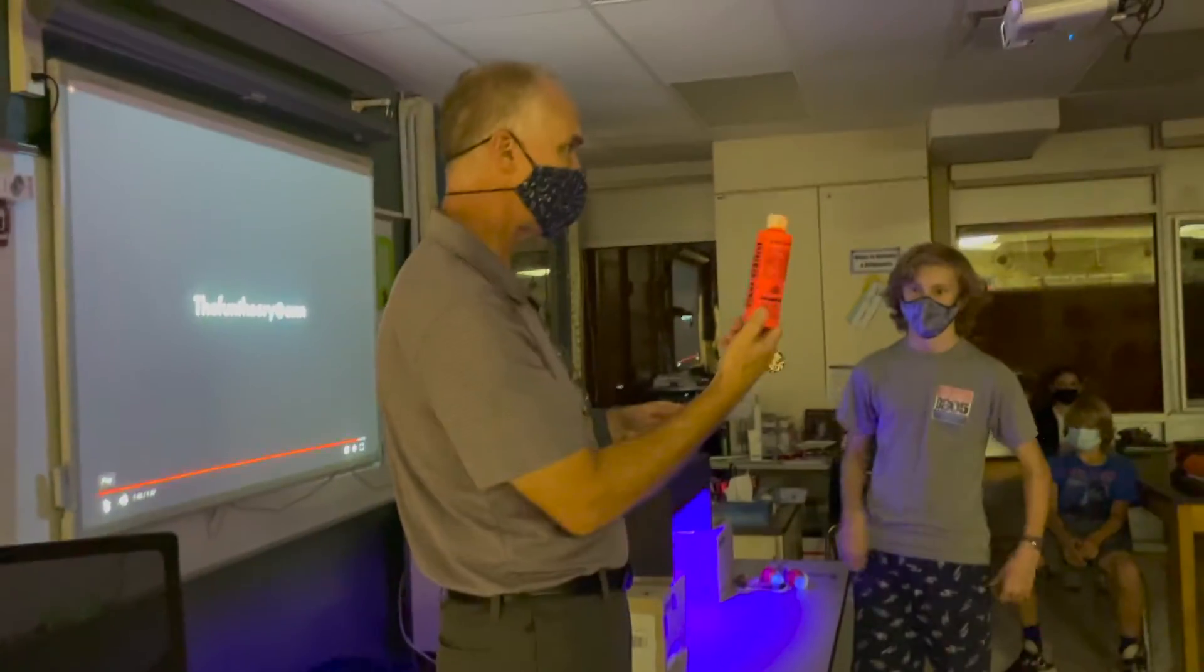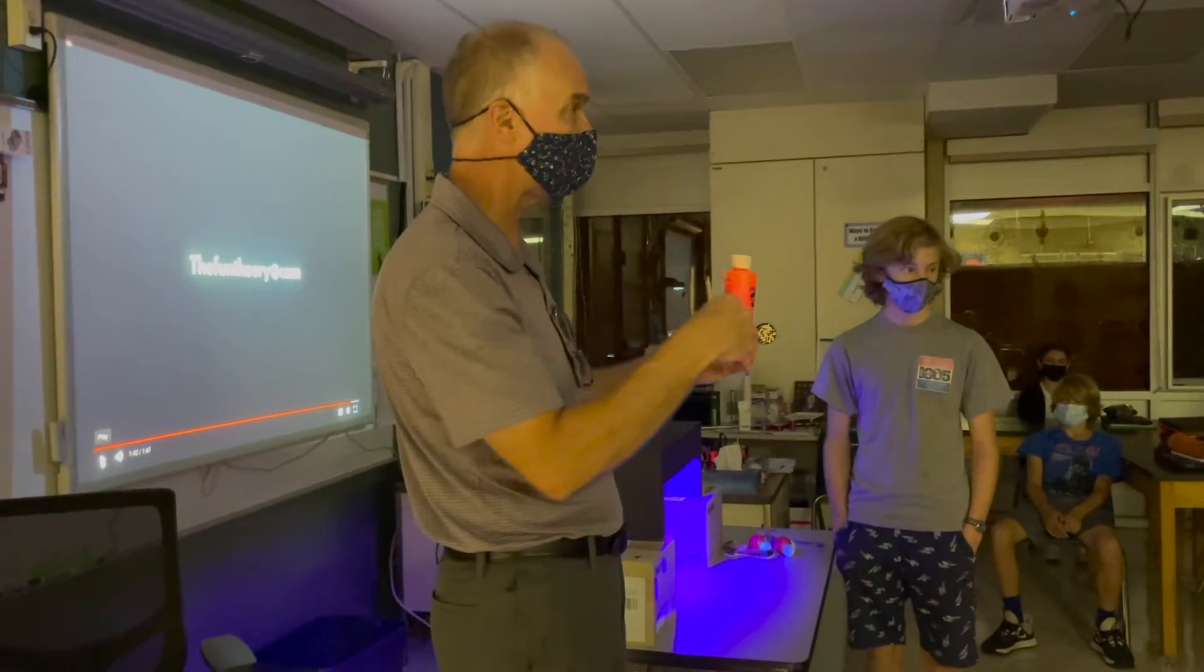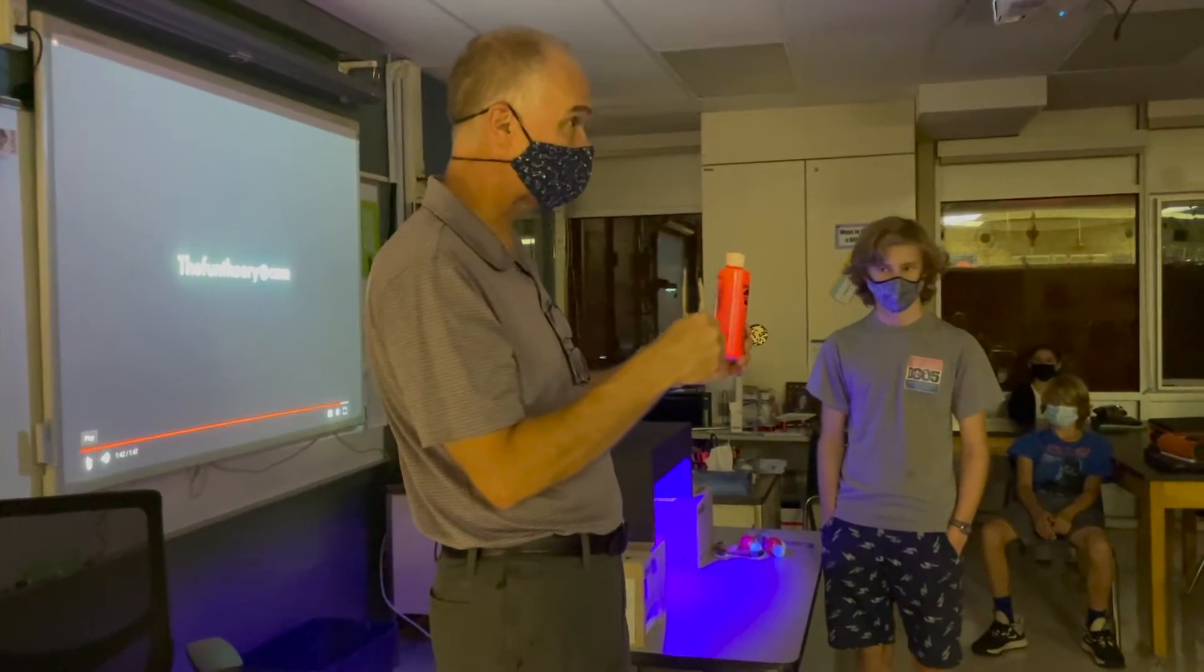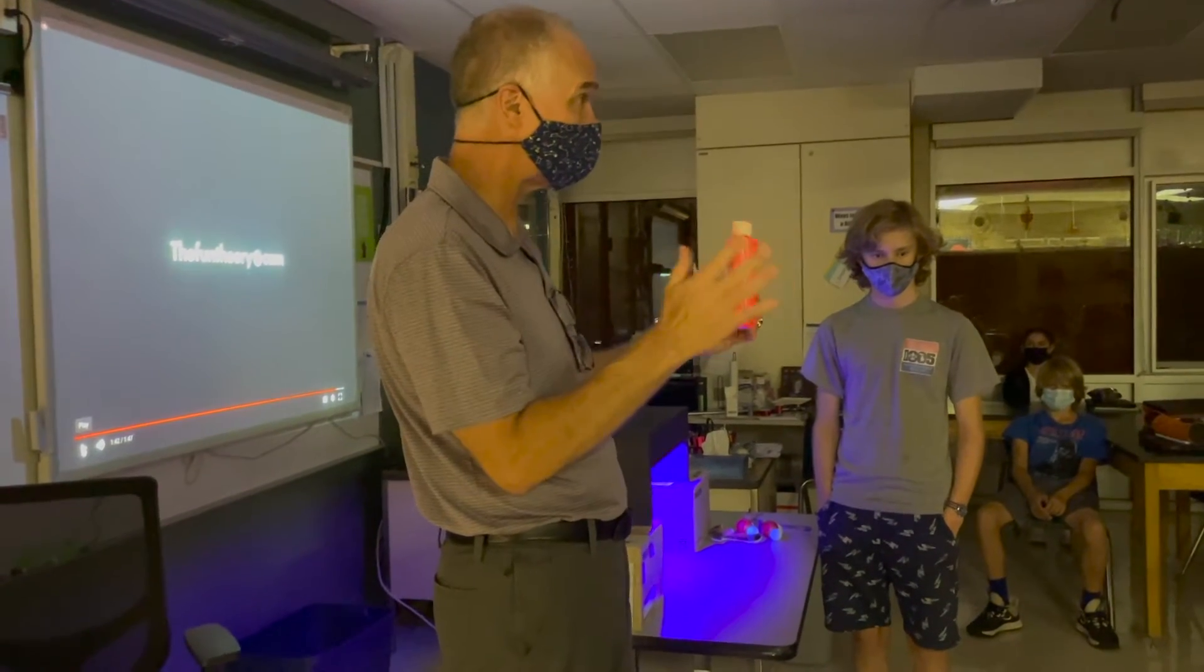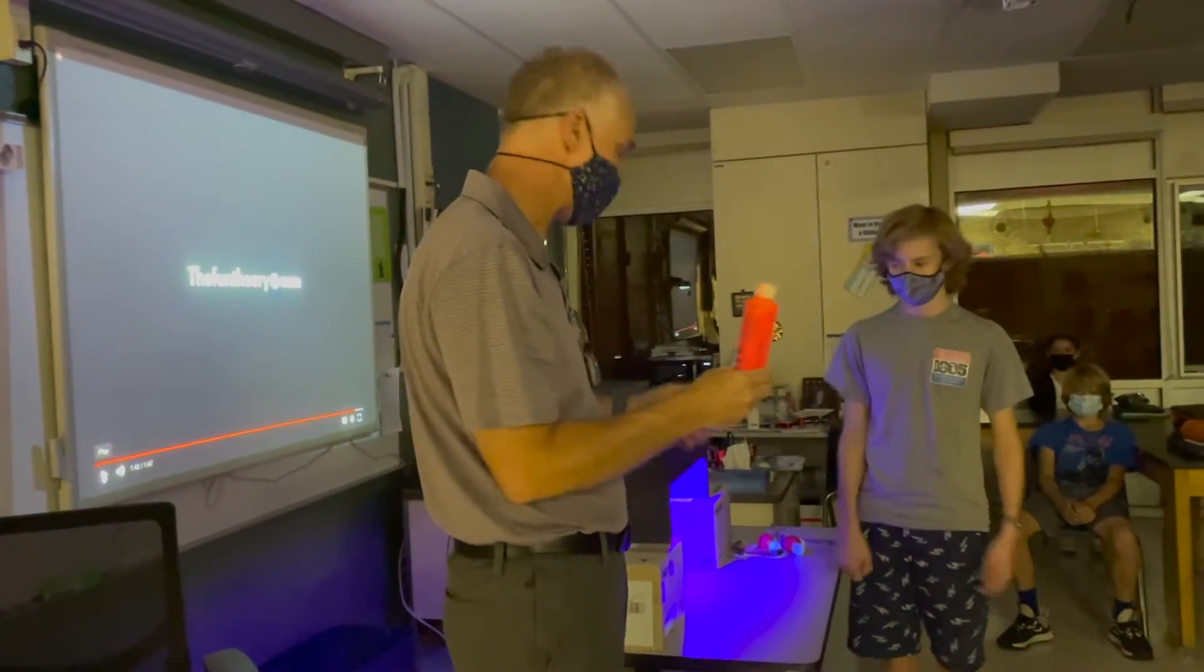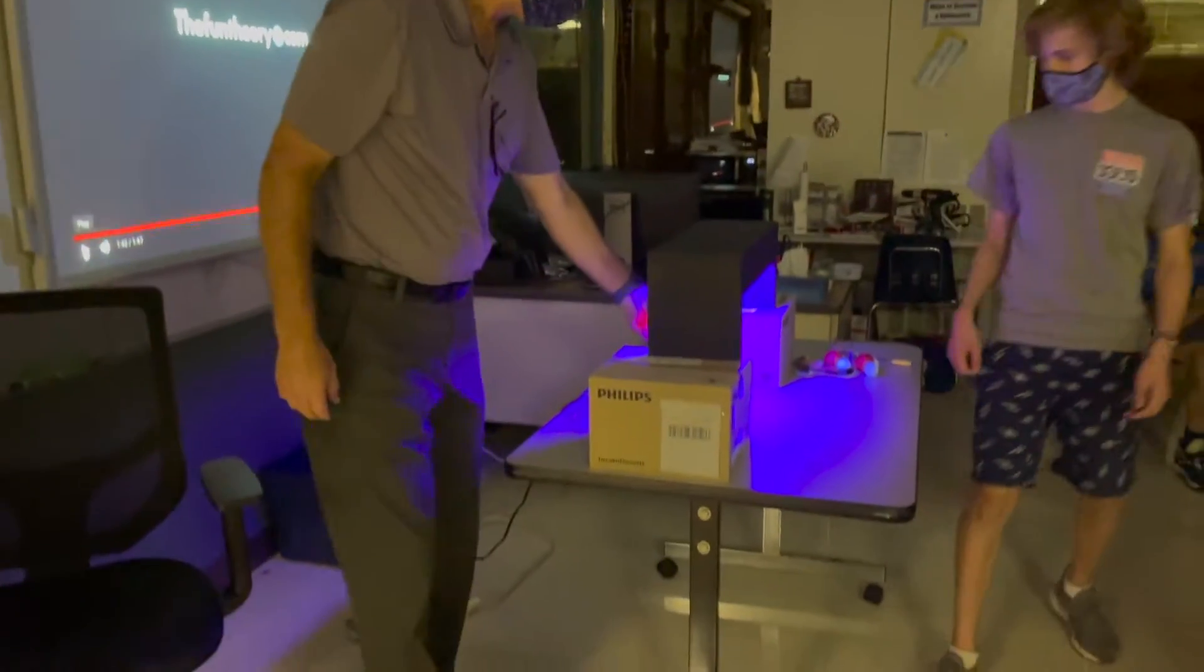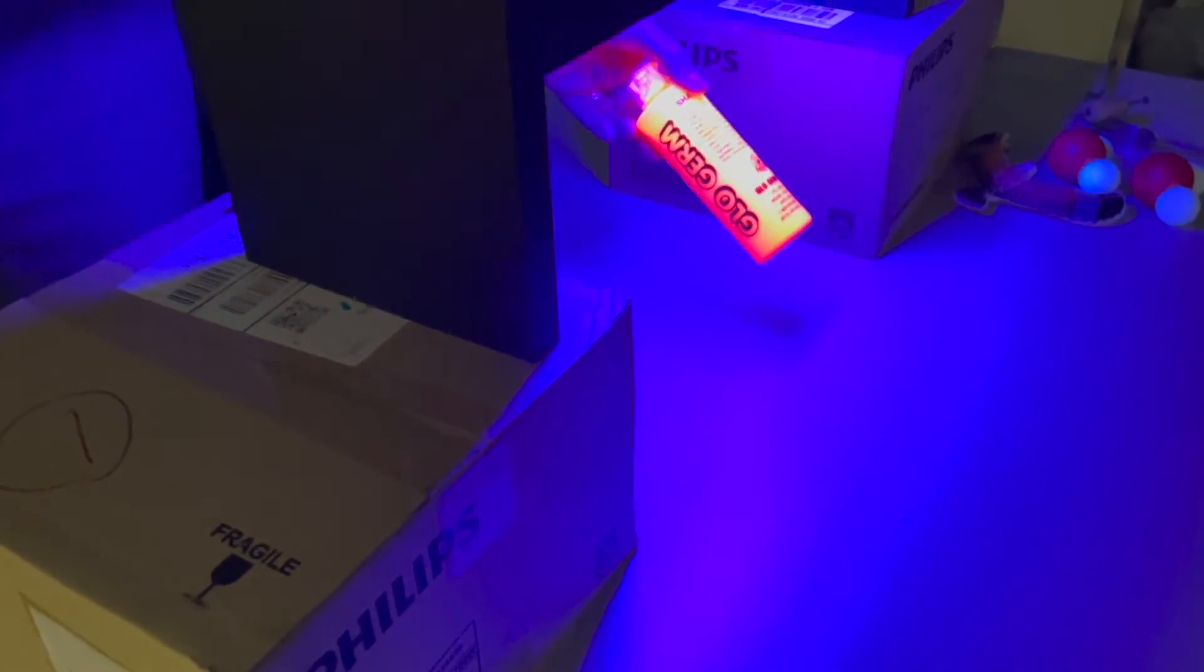This is Glow Germ, the stuff that you put on your hands and try to wash it off. If you can wash this off, then you're doing a really good job of washing your hands. Doctors and nurses practice with this - they get tested every year to see if they're doing a good job. When I put it under this black light, this ultraviolet light, it glows really bright. That's what his hands are going to do once I put it on.